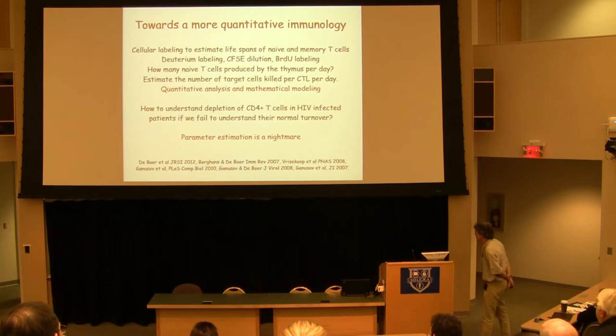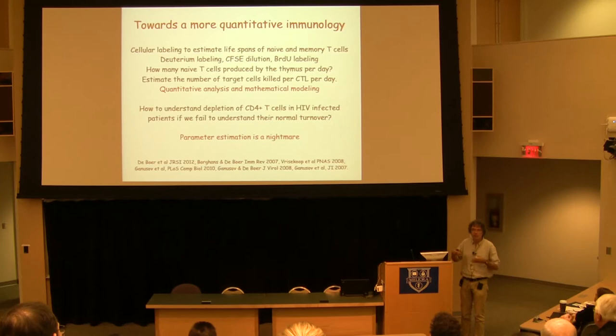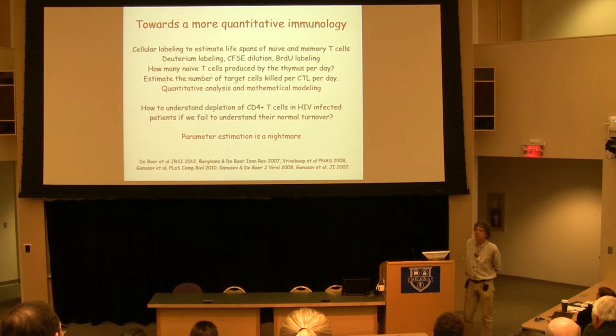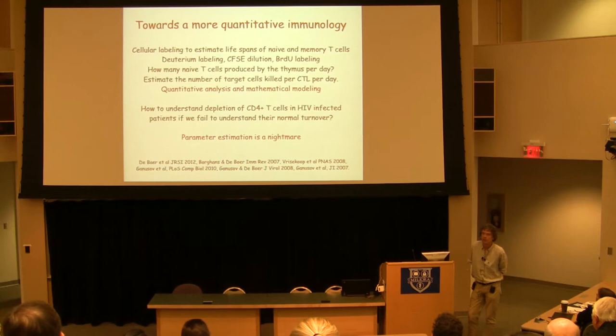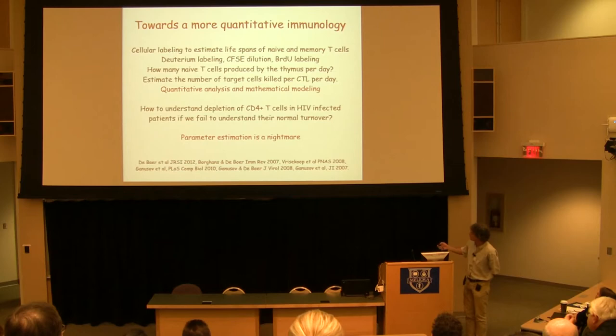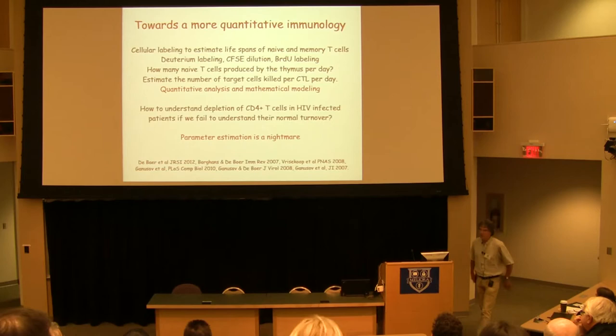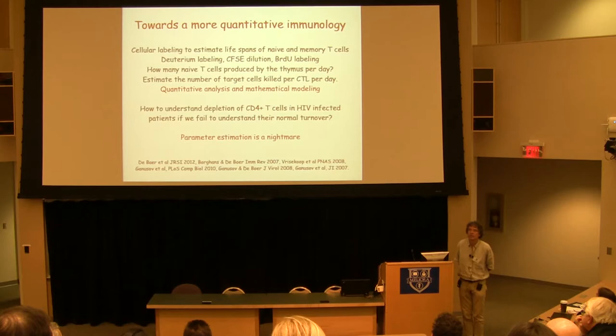Beautiful data because we use labelling techniques like deuterium labelling, CFSE labelling, and BRDU labelling. There are several groups of modellers involved and we compete a little bit with each other on what is the best model to interpret this data. The end of the story is that there is no consensus. Estimates for memory life spans vary from a few weeks to years, and estimates for naive life spans also vary from months to a decade. The take-home message is that parameter estimation in the immune system is a nightmare, and this is something we have to do very carefully. That sometimes makes me ask questions if I see models with very many parameters in it, because I know it's very difficult to estimate all the parameters.